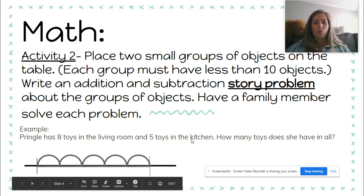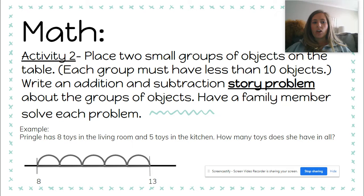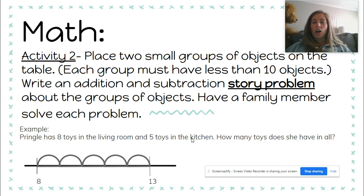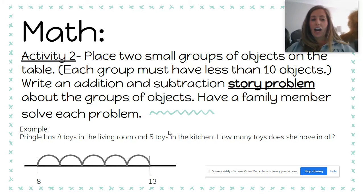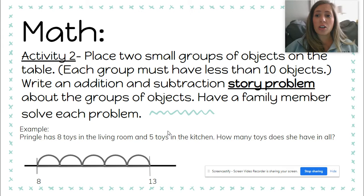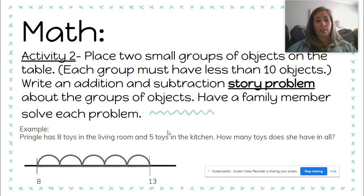Alright, so activity 2 for math is to place two small groups of objects on each table. Each group must be less than 10 objects. Write an addition and subtraction story problem about the group of objects. Have a family member solve each problem. These could be any objects that you have in your house. We did give you some cubes inside of your math packet, so you could use those, and you can use toys, anything you want.